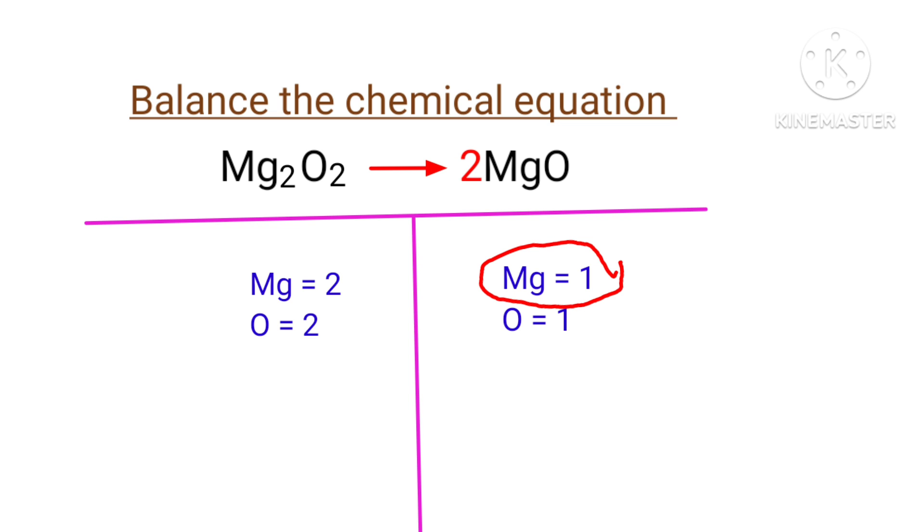Now in the right hand side, the 1 magnesium atom is changed into 2 magnesium atoms, and the 1 oxygen atom is changed into 2 oxygen atoms. So the equation is now balanced. There are 2 magnesium atoms and 2 oxygen atoms on both sides.